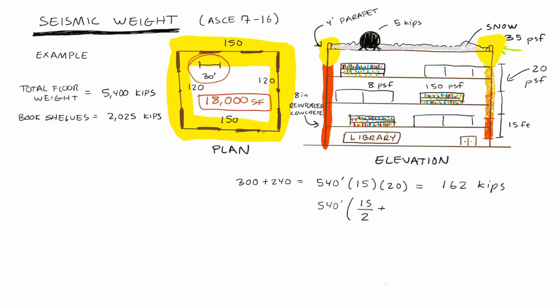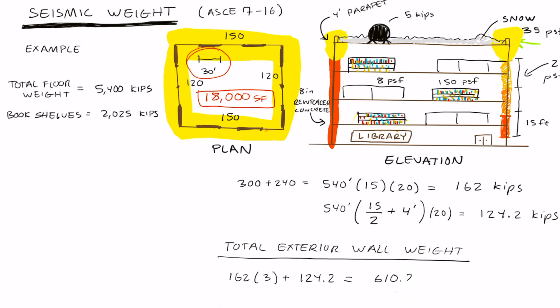For the roof and the parapet, we have 540 times half of the story height plus 4 feet, the height of the parapet, times the density of the exterior wall, and that gives us 124.2 kips. The total exterior wall weight equals the concentrated weight of the walls at each level, three levels, plus the weight of the walls on the roof and the parapet weight, which gives us 610.2 kips.